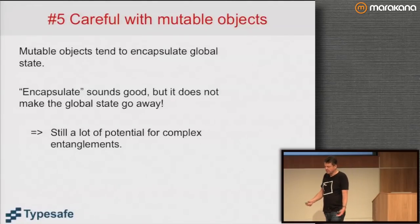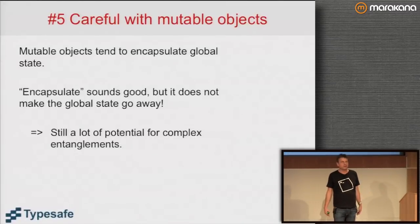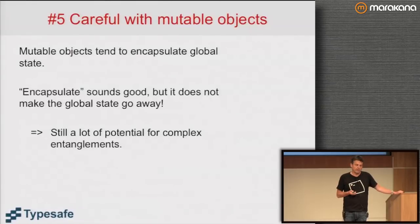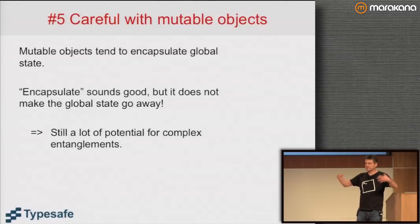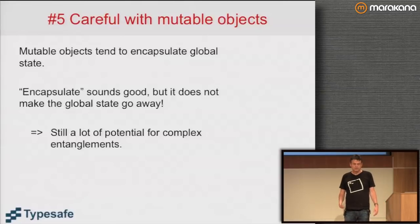The counterpoint is that since state is more problematic the more global it is, mutable objects are typically much more critical. Mutable objects tend to encapsulate global state — that state is visible to everyone who gets access to the object, which could be a large graph. Encapsulation sounds good but does not make global state go away; there's still a lot of potential for complex entanglements.